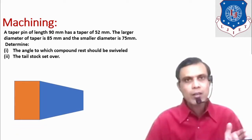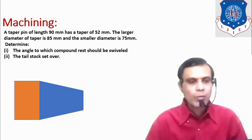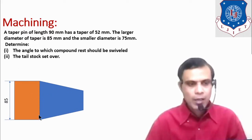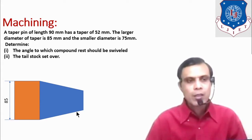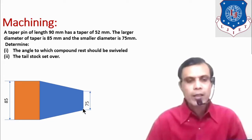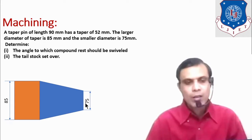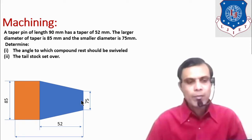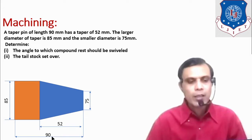Let us first understand the drawing to get a better idea of the problem. This is the given taper pin. The larger diameter of the taper part is 85 mm, the smaller diameter of the taper is 75 mm. The length of the taper is 52 mm, and the total length of this pin is 90 mm.